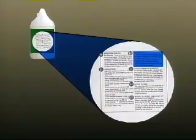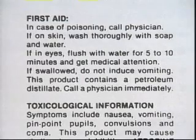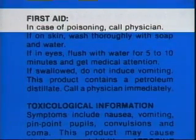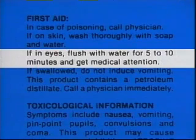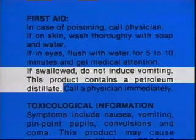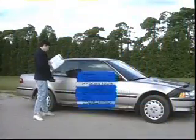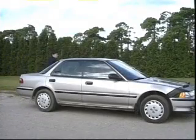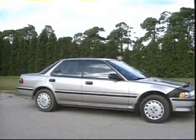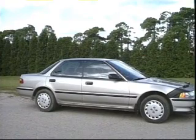Although specific instructions on what to do in case of an accident vary from product to product, you will typically find information such as this: in case of poisoning, call a physician. If on skin, wash thoroughly with soap and water. If in eyes, flush with water for five to ten minutes and get medical attention. If swallowed, do not induce vomiting — this product contains a petroleum distillate. With some products you should induce vomiting; the label of the pesticide involved will tell you exactly what to do in each instance. Call a physician immediately and take the label with you to the doctor's office.